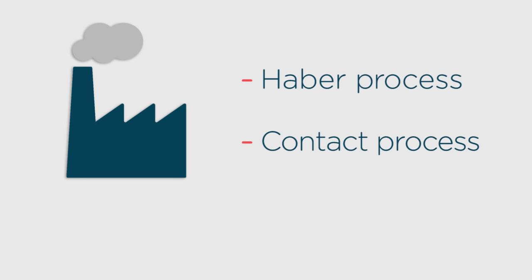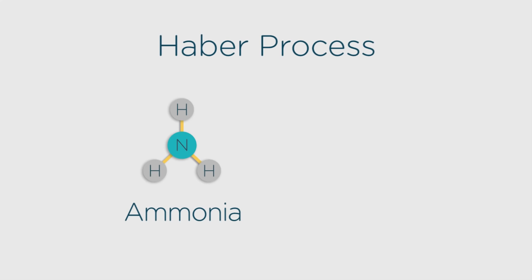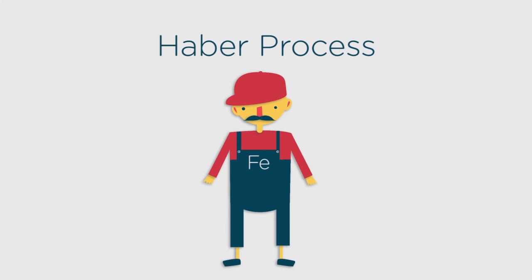Here are two manufacturing processes that use catalysts. Firstly, the Haber process to manufacture ammonia, most of which is used in fertilizers. In this process iron is the catalyst. The iron has potassium oxide which acts as a promoter added to increase its efficiency.